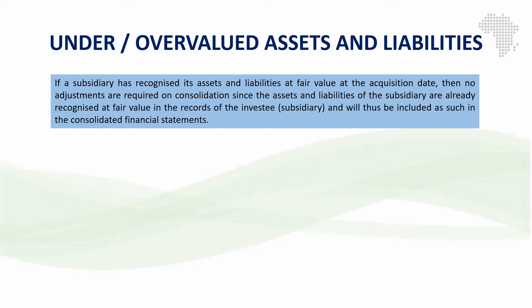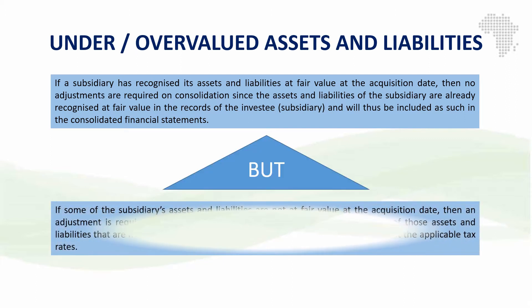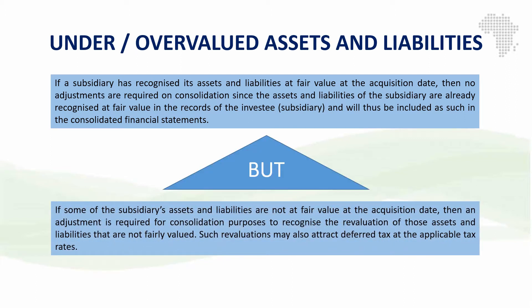So if the subsidiary has recognized these assets and liabilities at fair value, then there's no need for us to make any adjustments at acquisition date because those assets and liabilities are already in line with the measurement principle of IFRS 3. However, if some of the subsidiary's assets and liabilities are not at fair value at acquisition date, then we need to make adjustments to bring those assets and liabilities to their fair values. As mentioned, those adjustments may attract deferred tax.